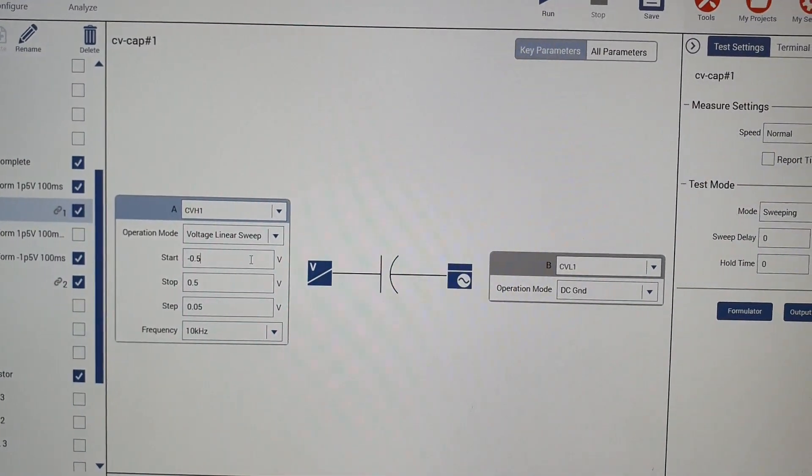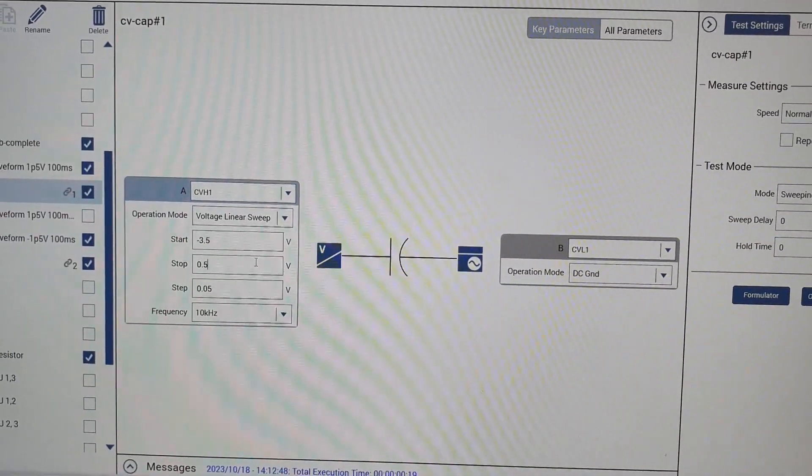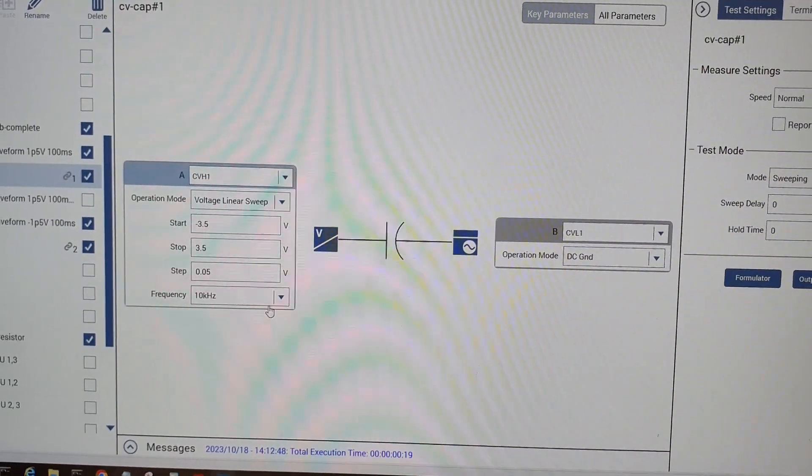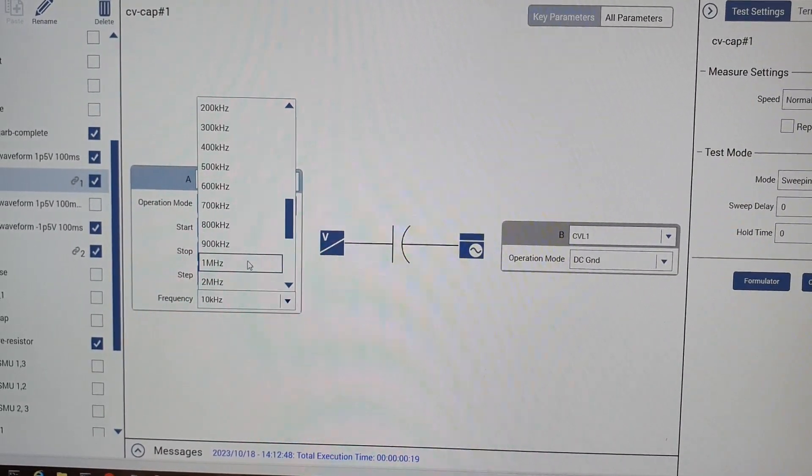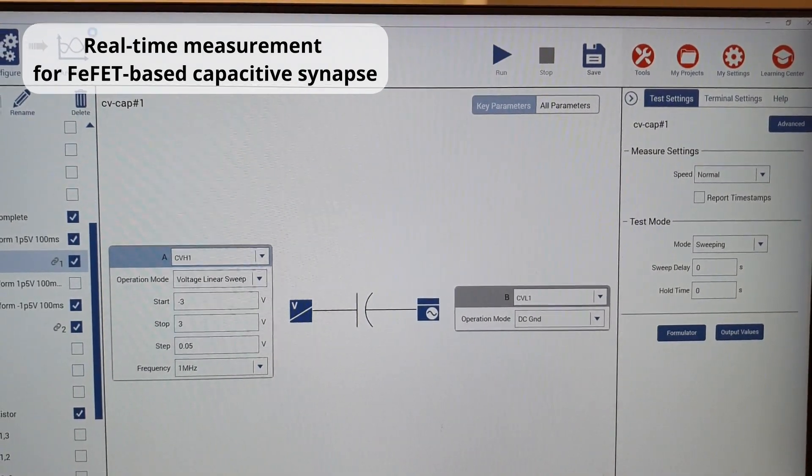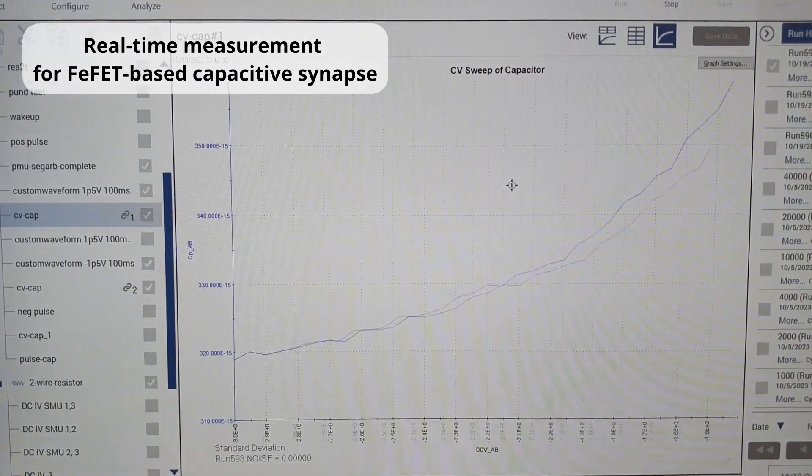I'm going to do a CV measurement with a voltage sweep, so I'm going to change the start voltage and stop voltage, and you can change the step voltage if you want, and the frequency. And then, click the run button to start the measurement, and you can get the CV characteristics of the capacitive synapse with high on-off ratio.